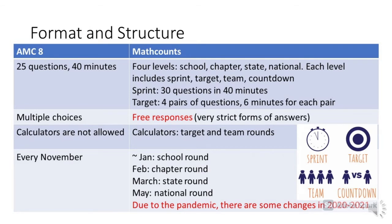Math Counts is a series of competitions with four different levels: the school level, the chapter level, the state level, and the national level. Each level includes four different tests. Every participant needs to finish a sprint round, which has 30 questions to be completed in 40 minutes. In the target round, each student needs to finish four pairs of questions, with six minutes to finish each pair.